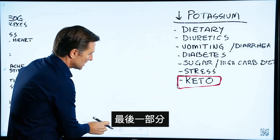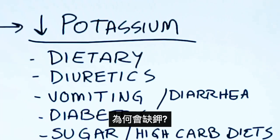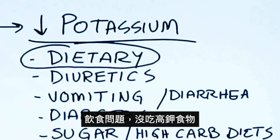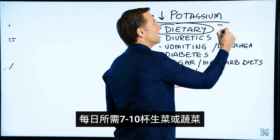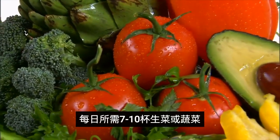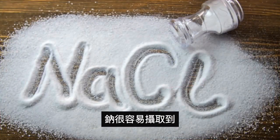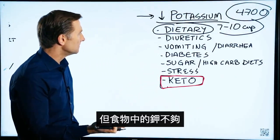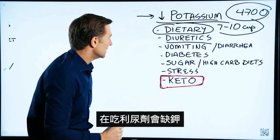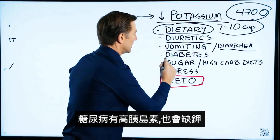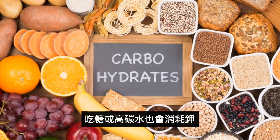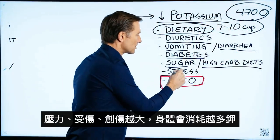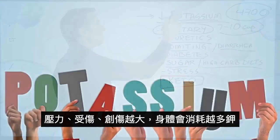How do people become deficient in potassium? Dietary — they don't consume enough foods high in potassium. The foods with the most potassium would be leafy greens or avocados. You would have to consume seven to ten cups of salad or vegetables to get close to your RDA, which is 4,700 mg. Potassium is the hardest nutrient to get — it's easy to consume sodium, but not as easy to get potassium from your diet. Diuretics can also cause a potassium deficiency. Vomiting and diarrhea can deplete potassium. High insulin in diabetics can create a deficiency. Sugar or a high-carb diet will deplete potassium as well. The more stress, injury, or trauma you go through, the more the body will dump potassium.